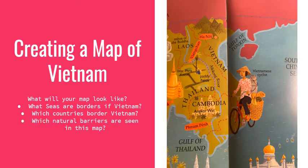Today we're going to take a look at creating a map. This is what your map might look like. What seas and borders do we have in Vietnam? We have the Gulf of Tonkin and the Gulf of Thailand. Which countries border Vietnam? We see Cambodia, Laos, and China. Which natural barriers are seen in this map? We see mountains, water, and also trees.